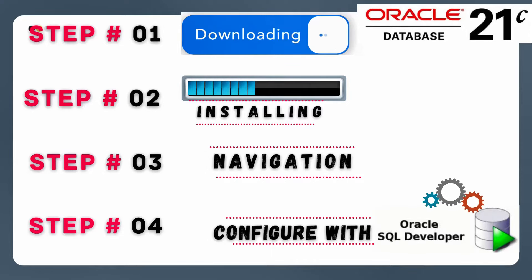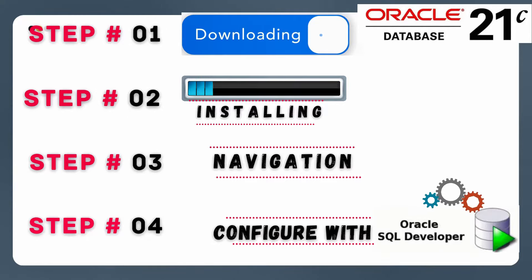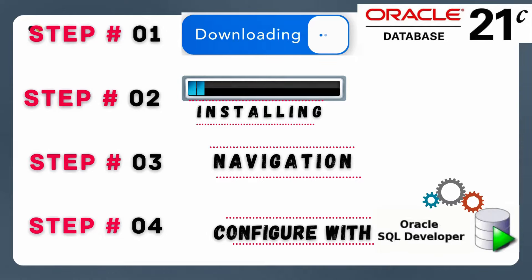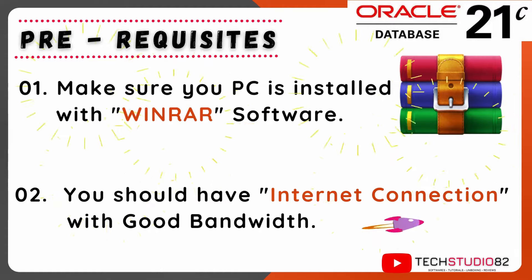In step one, we are going to download Oracle Database 21c Enterprise Edition software from the official website oracle.com. In step two, we are going to install the downloaded software on Windows 11. In step three, we are going to navigate the installed Oracle applications. And in the last step, we are going to download the latest version of Oracle SQL Developer and configure the system user, unlock HR user and Scott user. Before moving to the first step, there are some prerequisites.